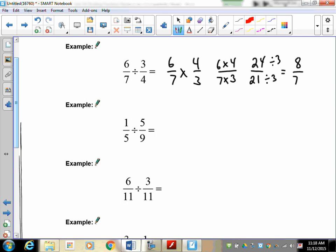The second question, again flip and multiply. That gives you nine over twenty five. In this case there's no reducing required.